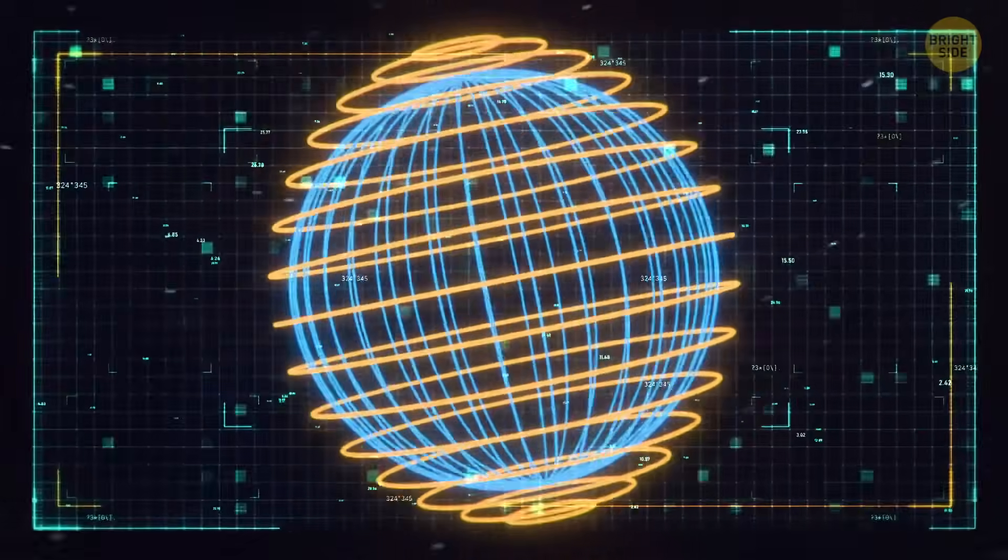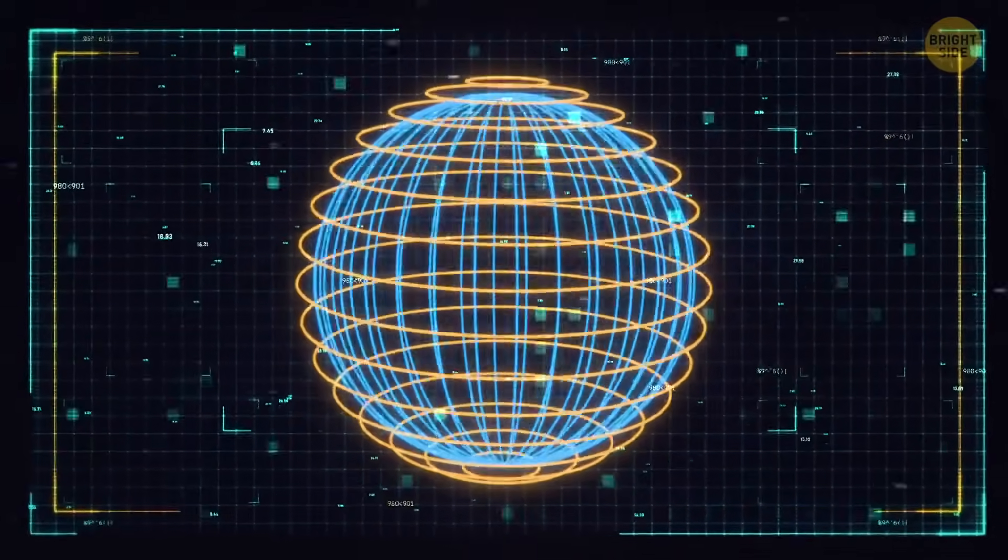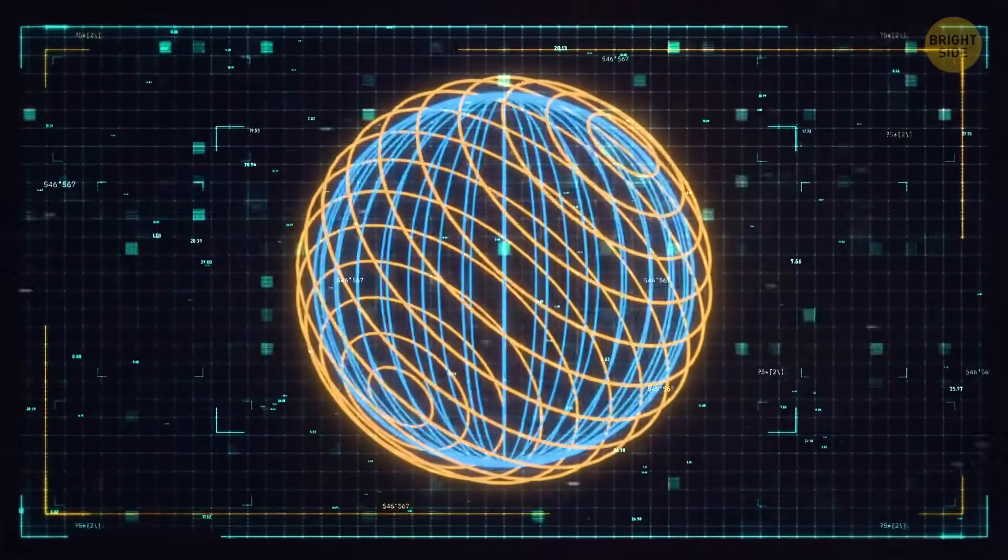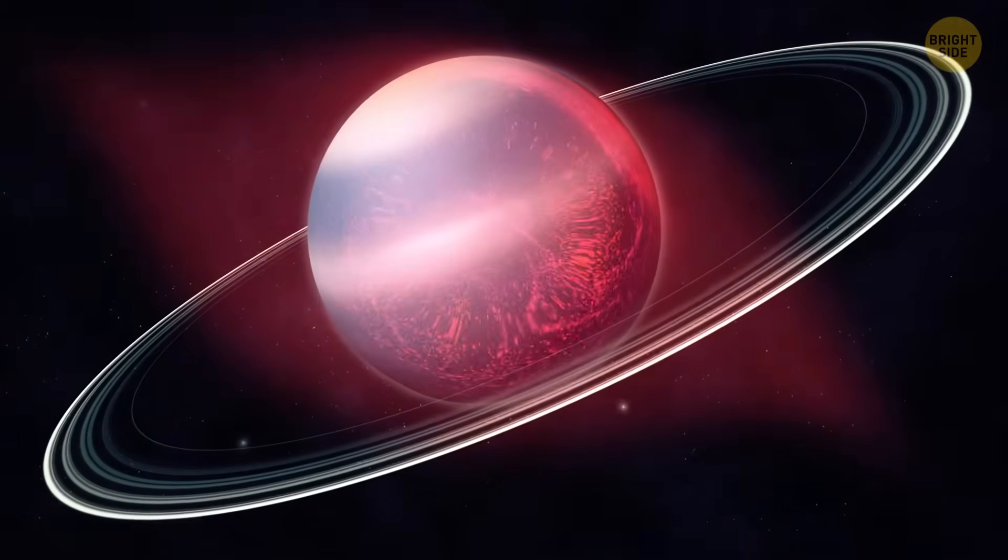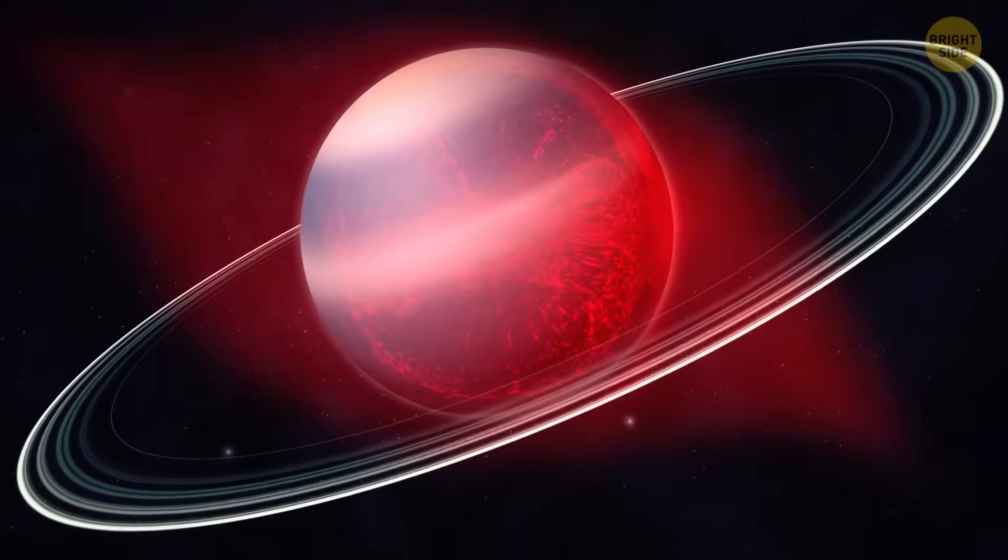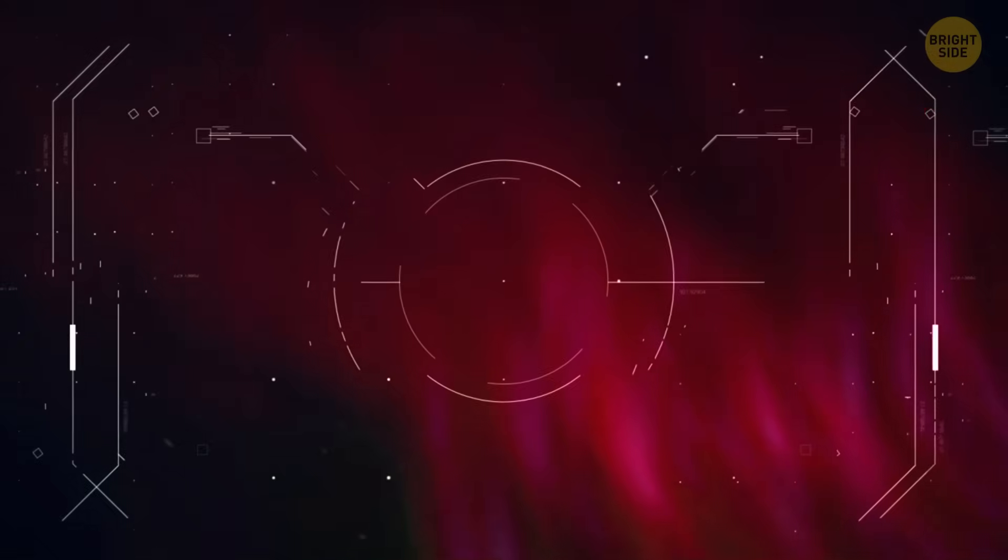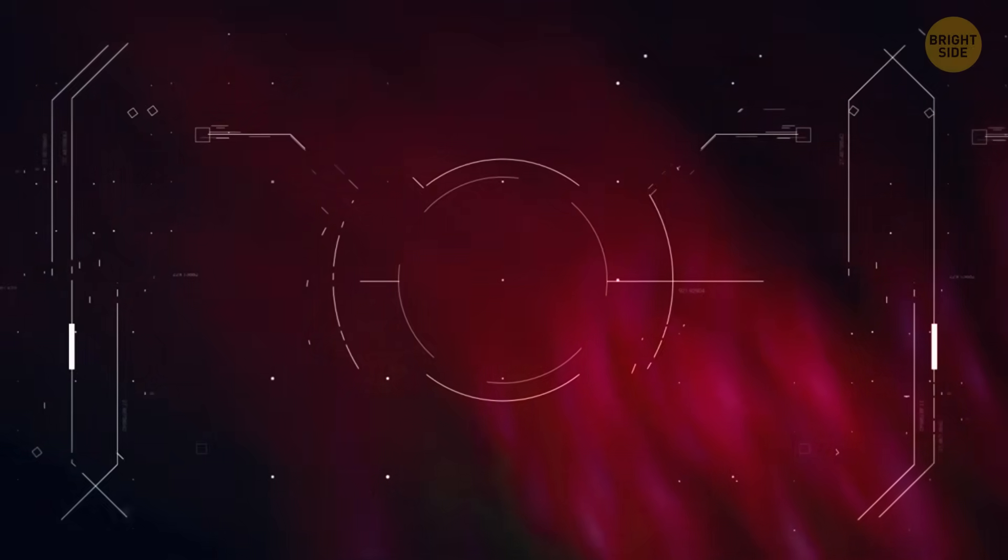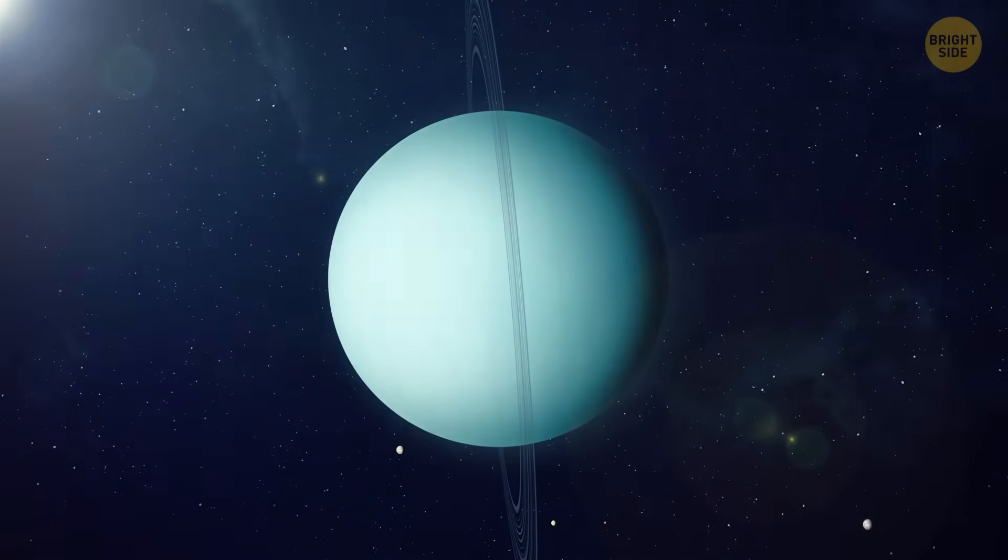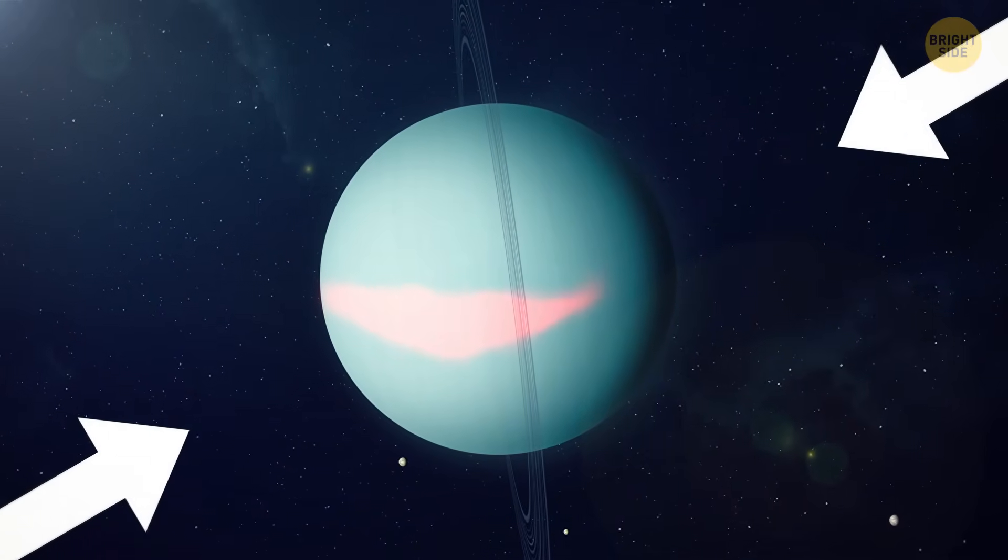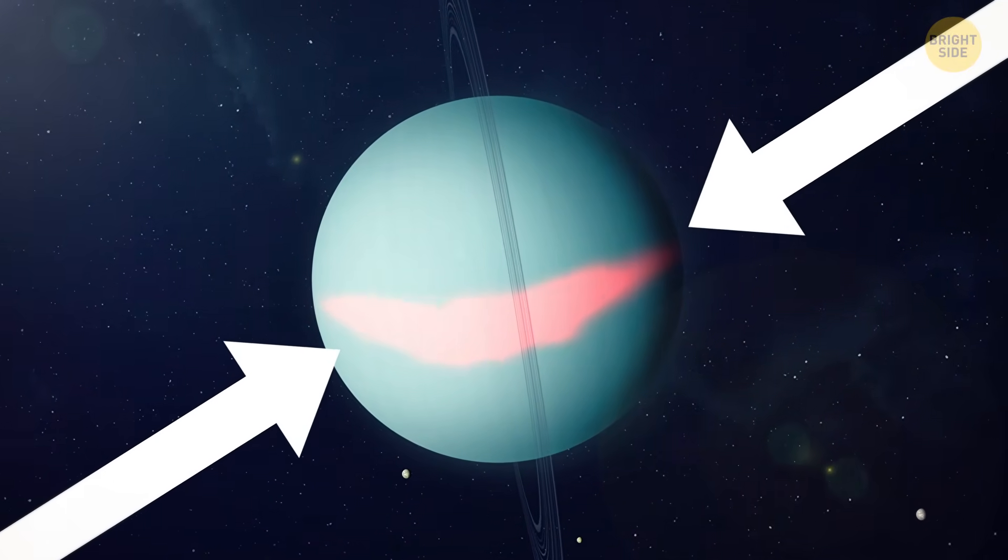And finally, Uranus' magnetic field is also tilted at an angle of 59 degrees from the planet's axis of rotation. This creates some interesting effects. The most obvious one is beautiful auroras, which are similar to the northern and southern lights on Earth. On Uranus however, the auroras are located near the planet's equator rather than at the poles.